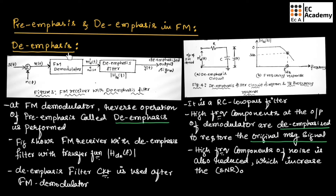Now let us understand de-emphasis. Figure 3 shows the FM receiver with a de-emphasis filter. At the FM receiver, the de-emphasis filter will be used after the FM demodulator, so that after demodulation of the signal we can obtain the de-emphasized output signal.